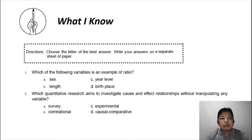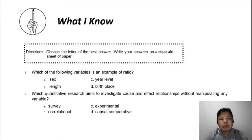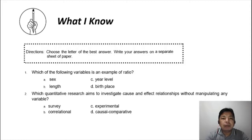Before we start, we're going to have some preliminary activities that you're going to be accomplishing. Do not forget to write your answers on a separate sheet of paper and also read the directions carefully. For the first one, the direction is: choose the letter of the best answer and write your answer on a separate sheet of paper. This is just a simple multiple choice — choose the letter of the best answer.